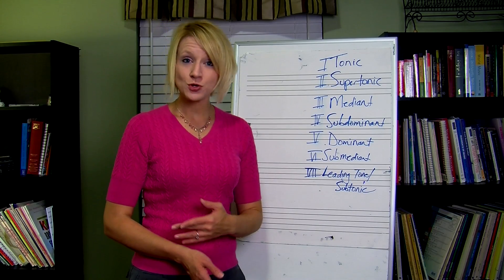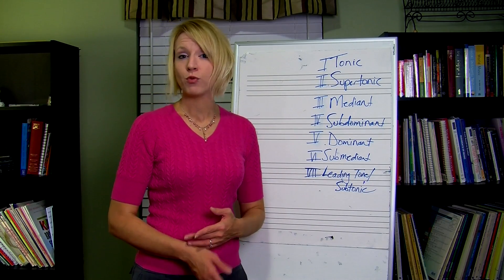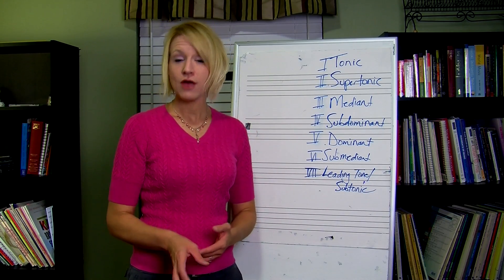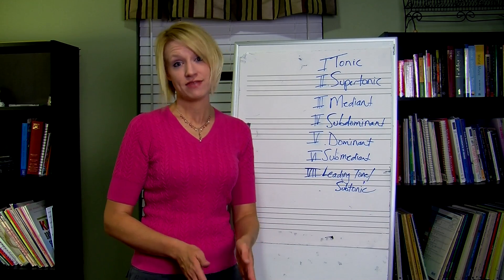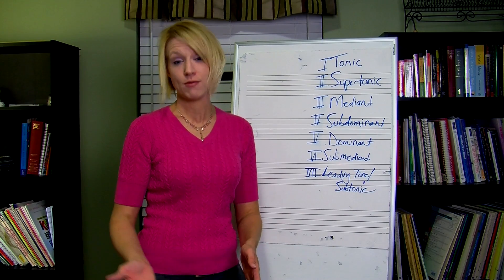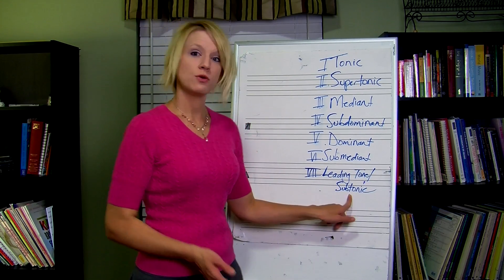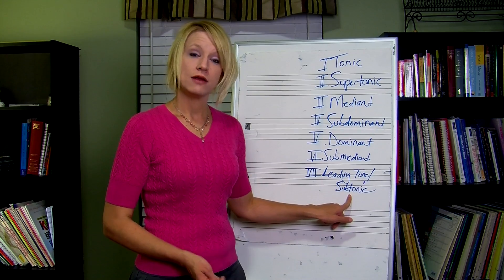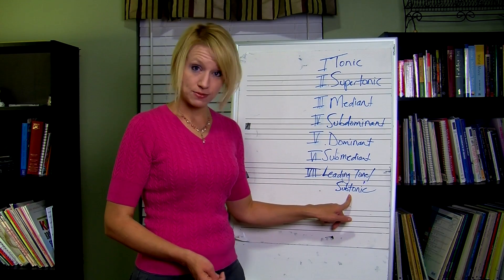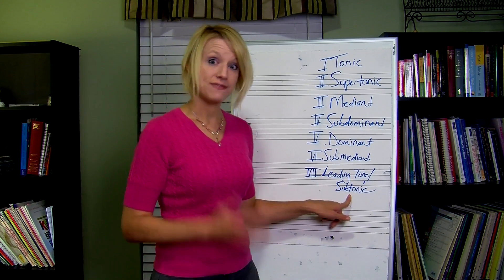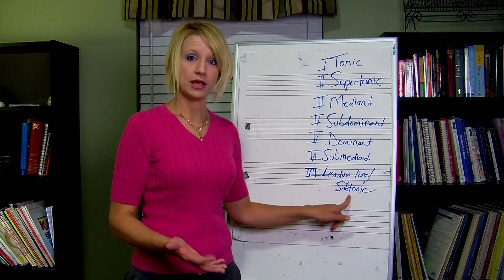Remember, though, in natural minor there's a whole step between the seventh scale degree and when we go back to the tonic. So in natural minor it would be the subtonic — that's what we would call that seventh scale degree.